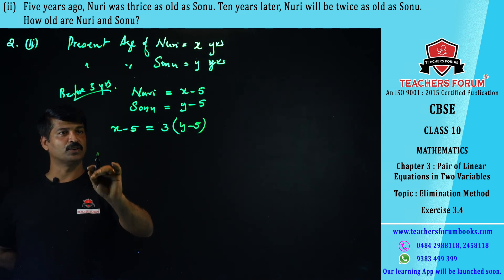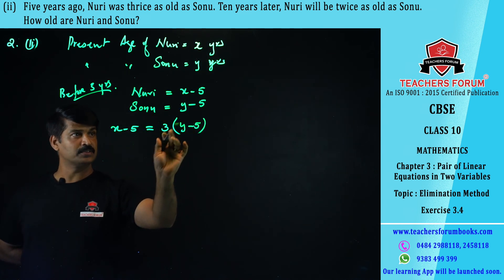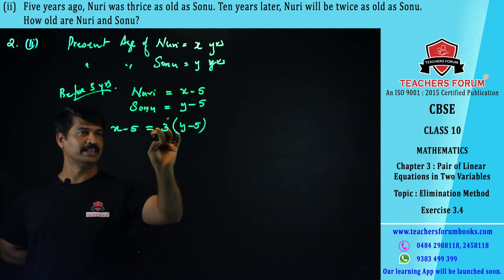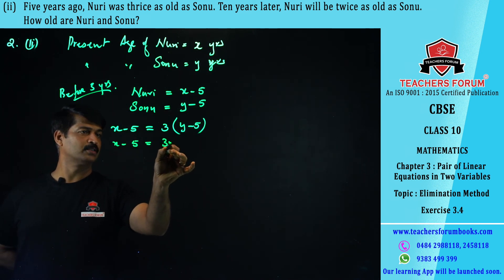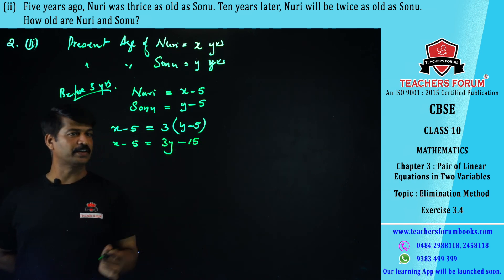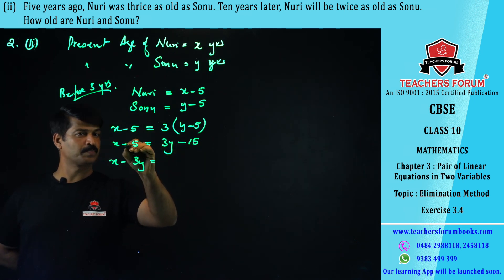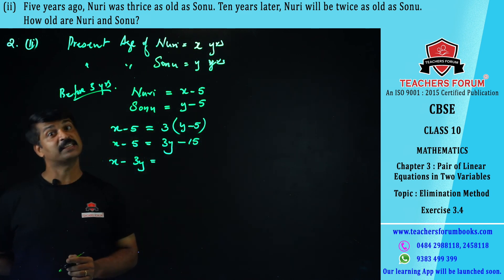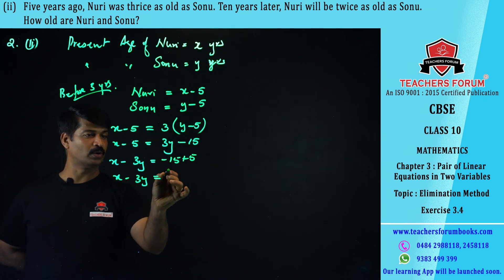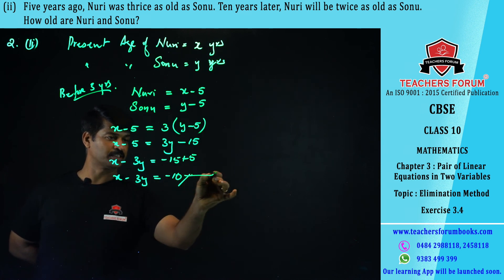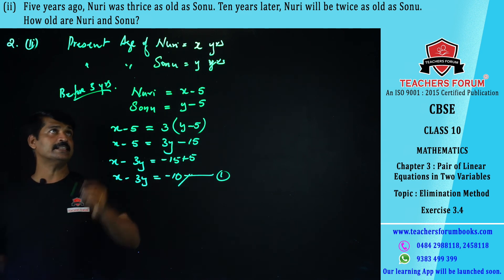Five years ago the age of Nuri, that is x minus 5, was three times that of Sonu, that is 3 into y minus 5. So it becomes x minus 5 equals 3 into y minus 5, which gives x minus 5 equals 3y minus 15. Taking 3y to the left side: x minus 3y equals minus 15 plus 5, that is x minus 3y equals minus 10. That is equation number 1.